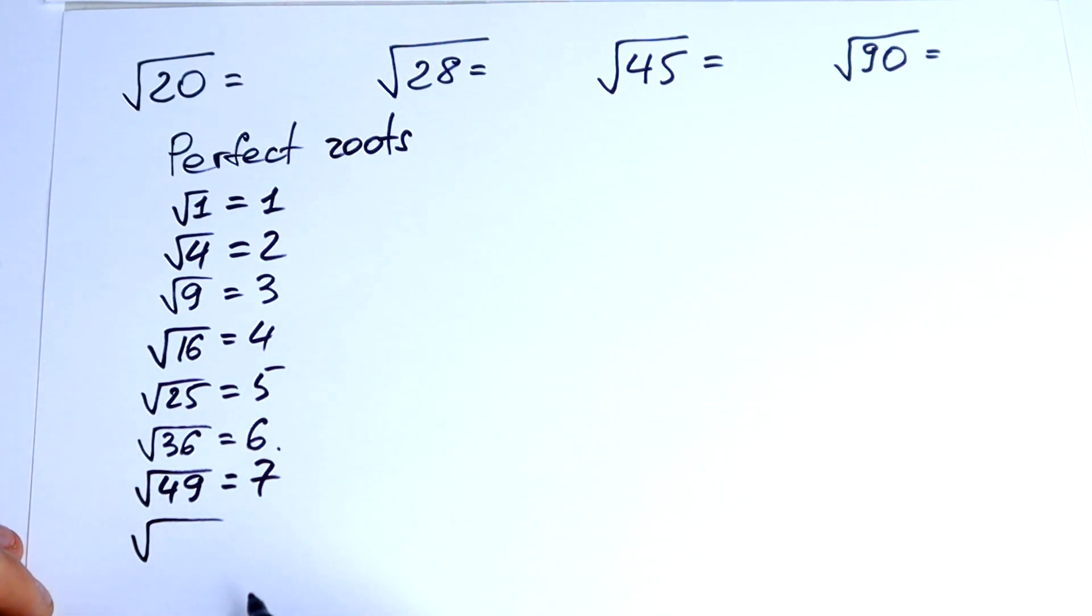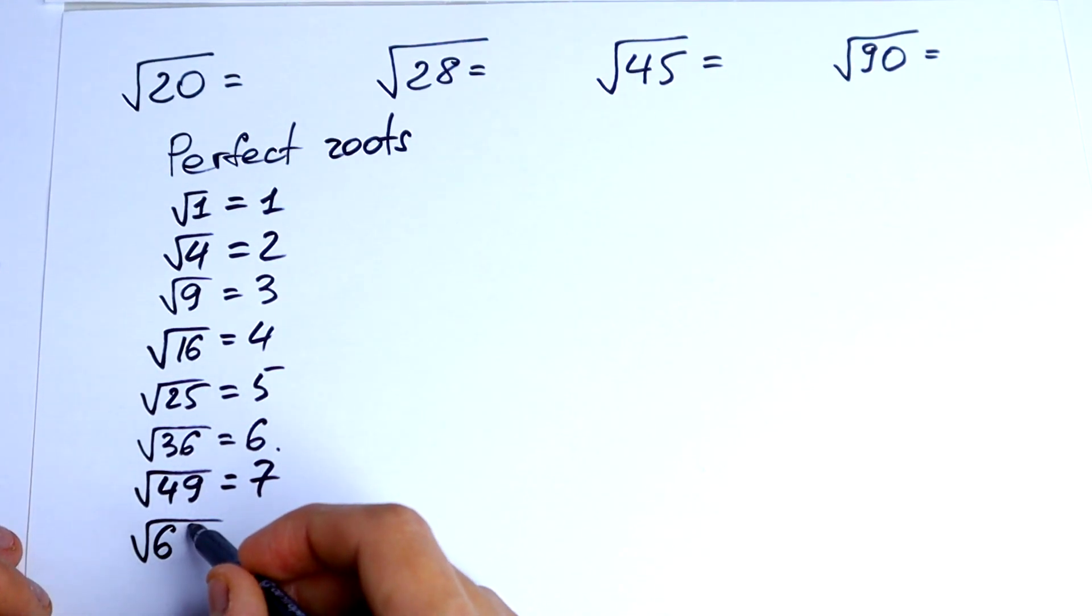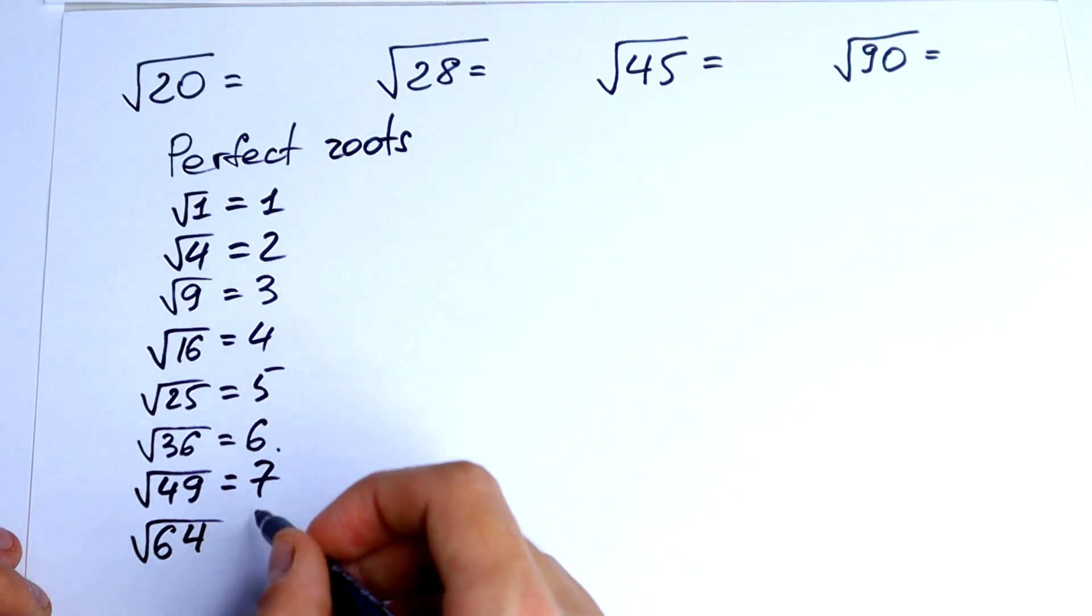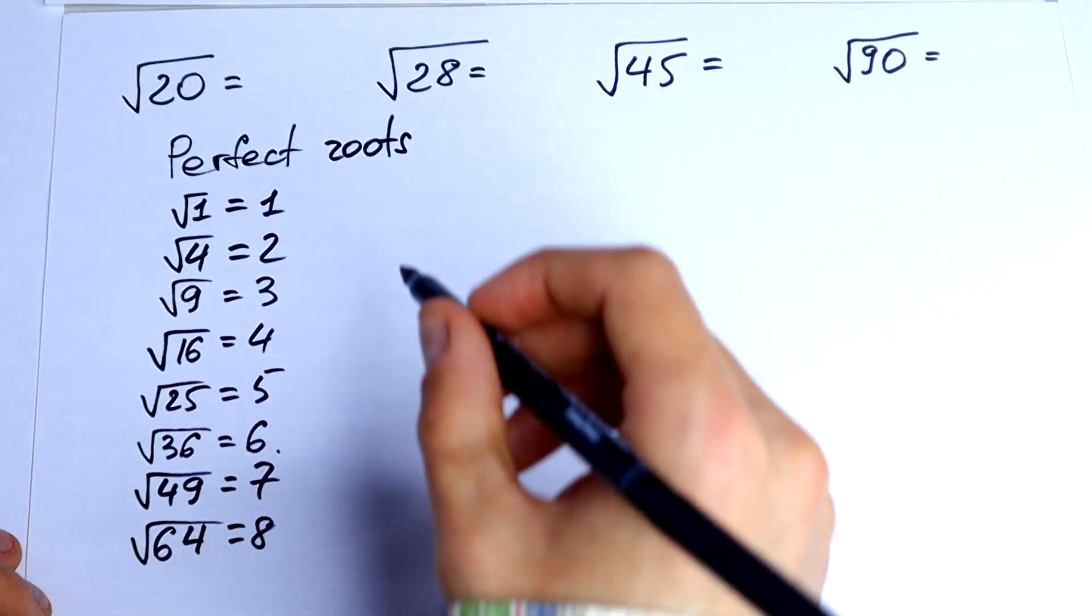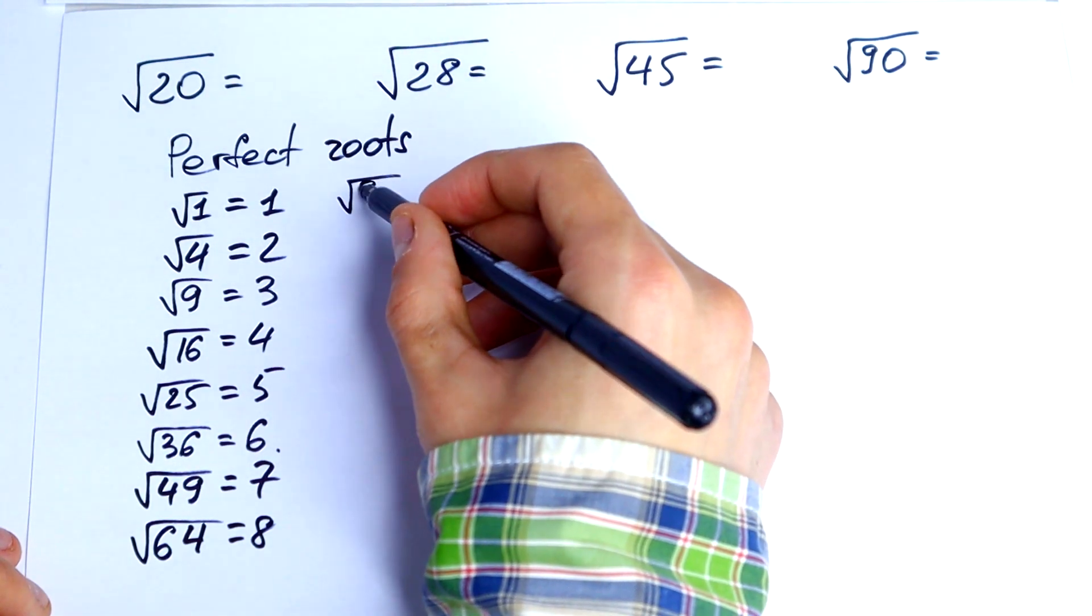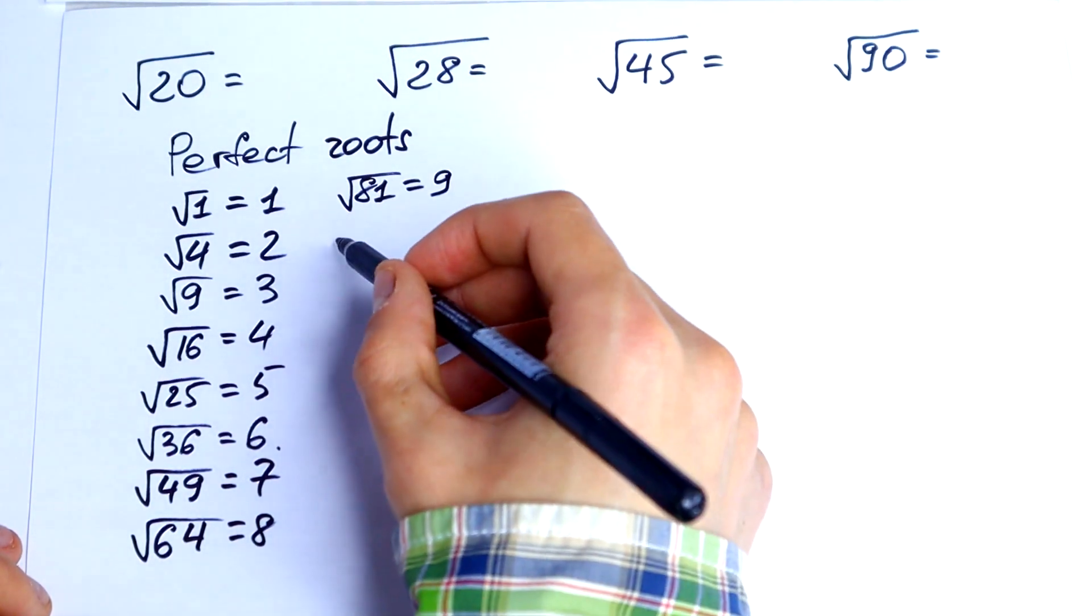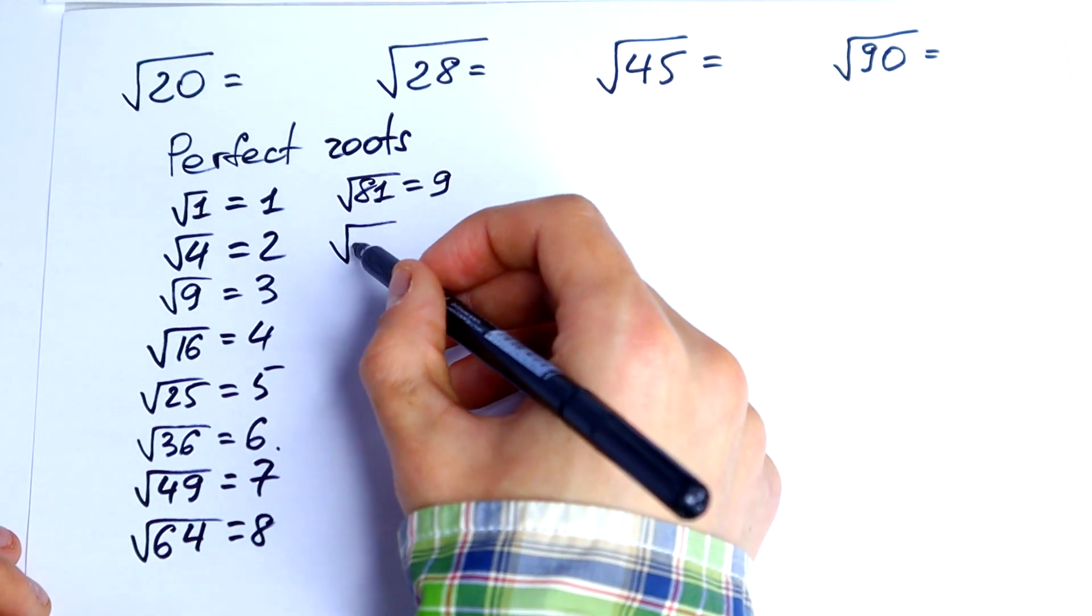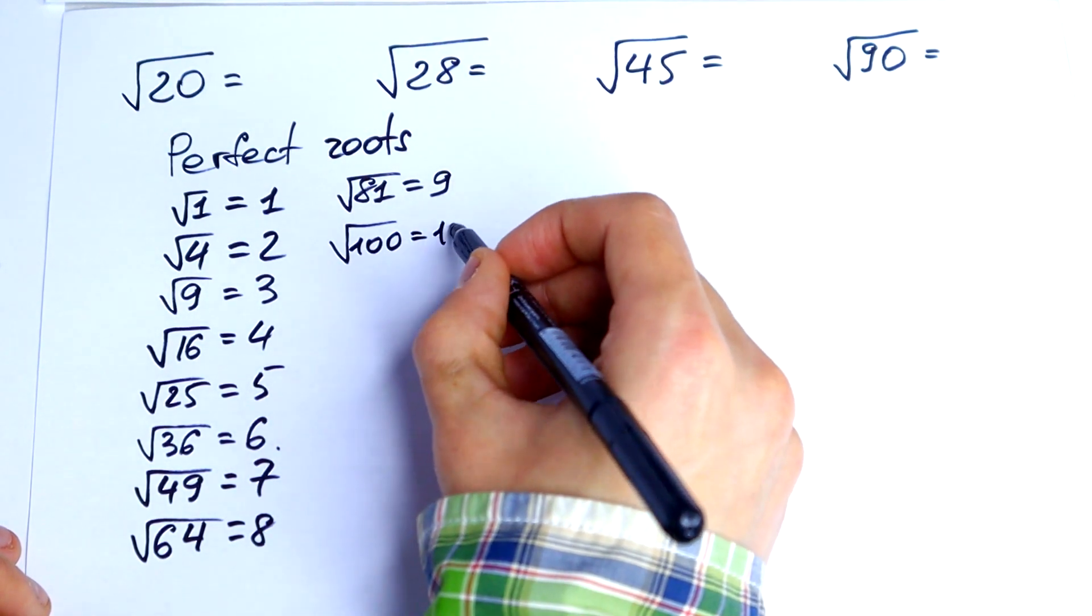Square root of 64 equals 8. Square root of 81 equals 9. And square root of 100 equals 10.